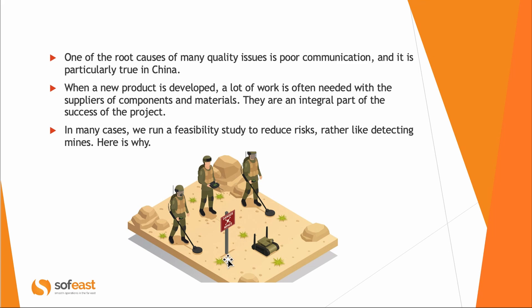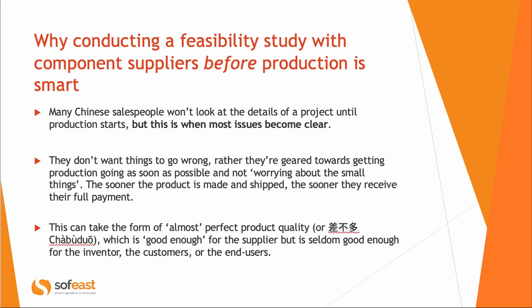You need their help to know where the mines are. A very common problem is that their salespeople might not look at the details, so you need to go over the details with them. This can often be done in a WeChat call, a Skype call, or a physical meeting if they're not far away. Very often they don't want to worry about small details — they will say 'yes, yes, no problem.' They want to get into production as fast as possible, ship, and be paid.